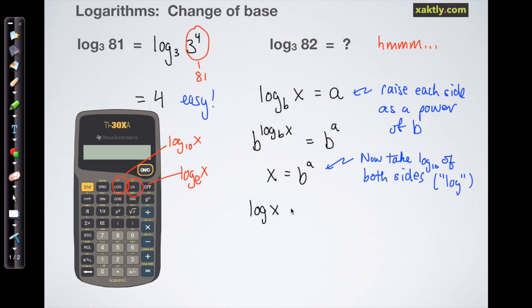And then I'll use my laws of logs to write log of X is equal to A log B, and then I can just rearrange that by dividing log B, which is just a number, over to the other side to get A equals log of X over log of B.